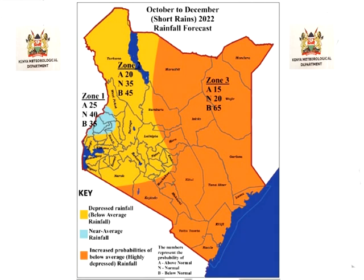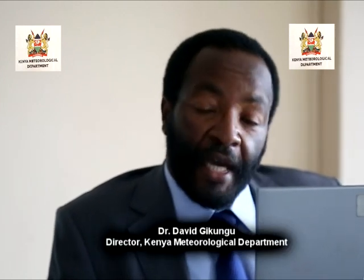The seasonal forecast indicates with high confidence that most parts of the country are likely to experience depressed rainfall, with higher probabilities over the eastern sector. During the season, it is likely that most areas will have a generally poor distribution of rainfall in both time and space.